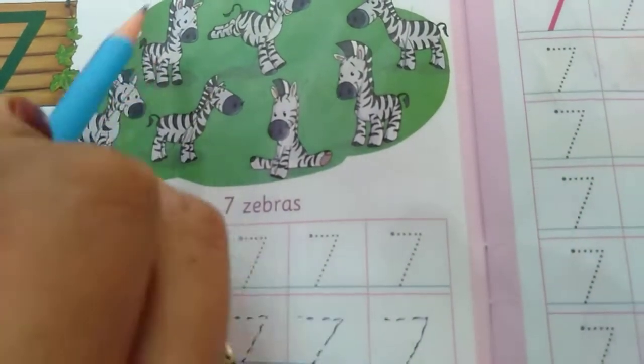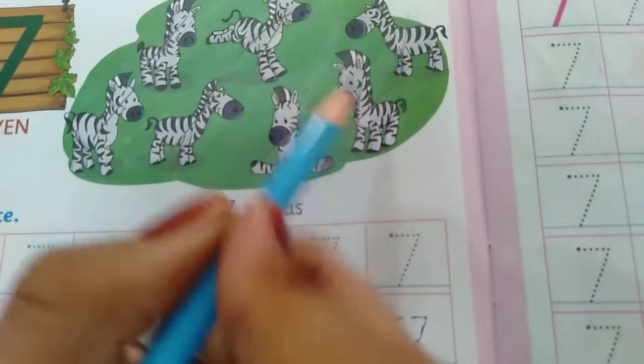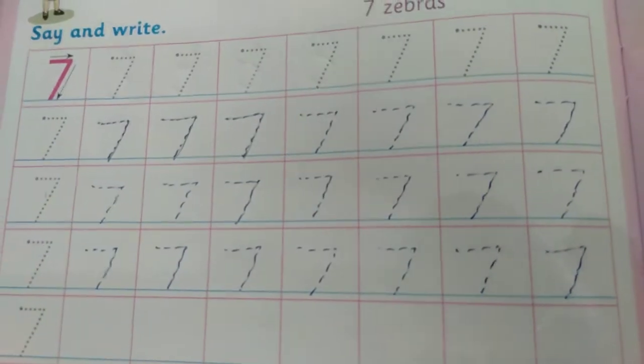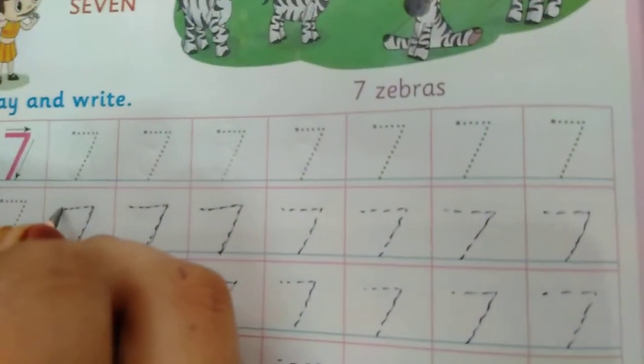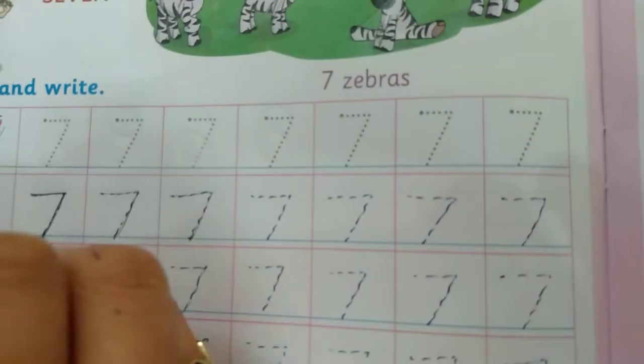1, 2, 3, 4, 5, 6, 7. Parents aapko full page pe dots kar dene hai. Slipping line, slanting line. Number 7.